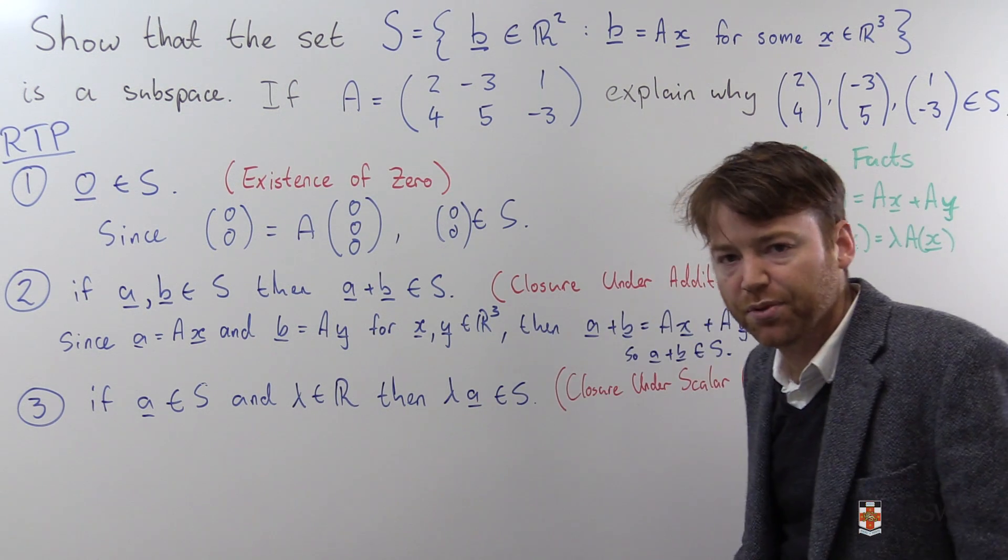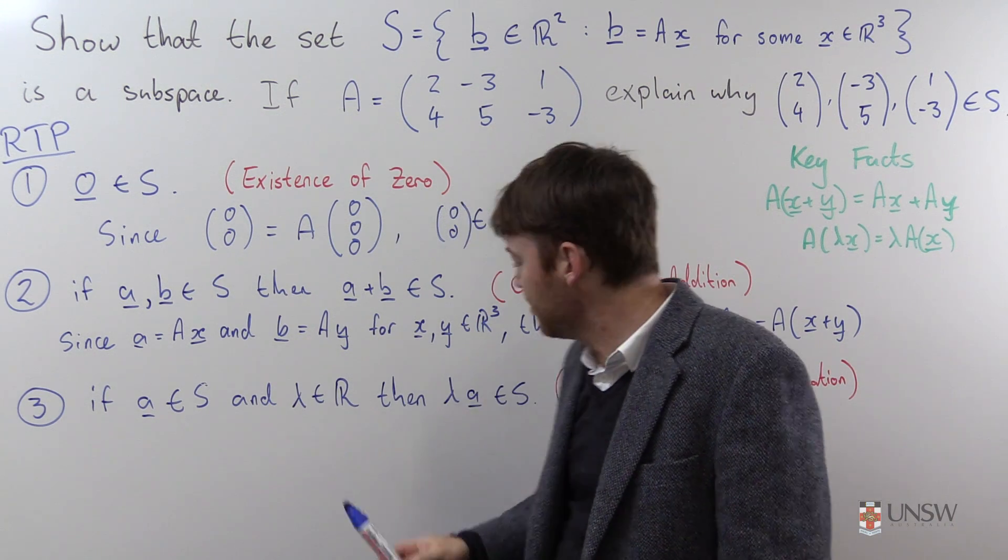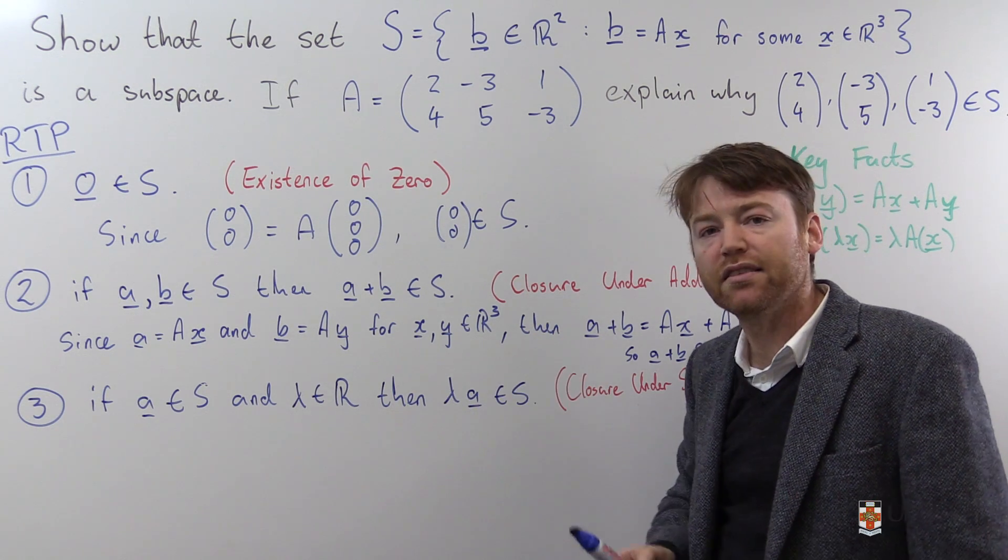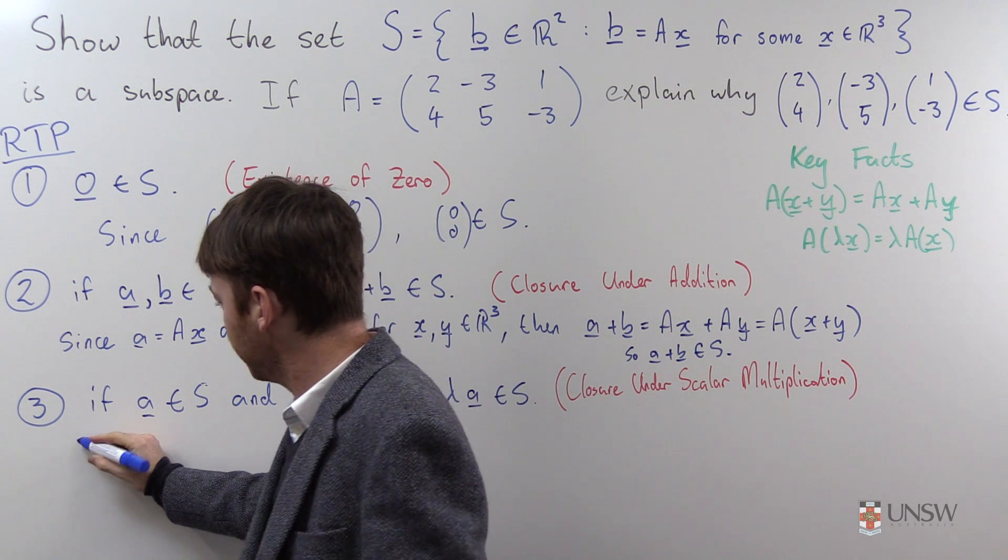The third thing we have to prove is that if we have some element A from S and then any old real number lambda, then lambda times A is still in S.